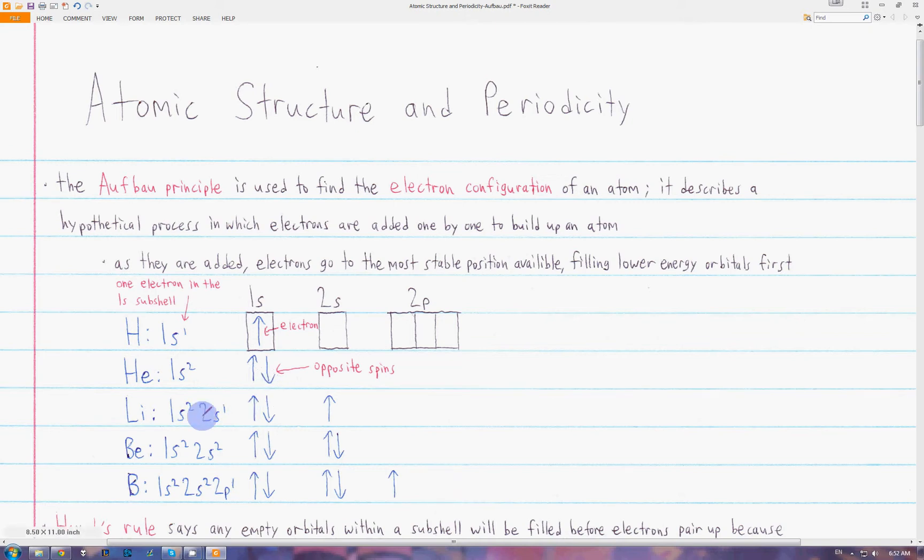Next we have lithium. The third electron can't go into the 1s subshell, since this orbital already has two electrons. So it goes into the next lowest orbital, which is the 2s. Then we have beryllium; the fourth electron again pairs up with the electron in the 2s subshell, because the s subshell is lower in energy than the p.